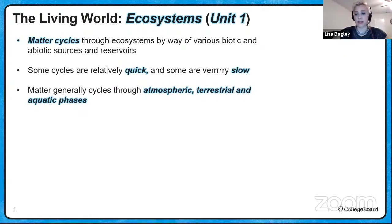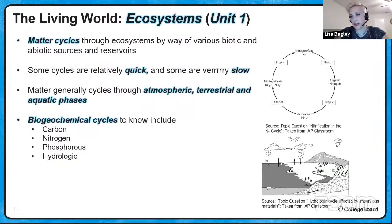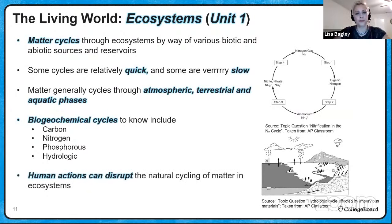The biogeochemical cycles you need to know include the carbon, nitrogen, phosphorus, and hydrologic cycles. Exam questions may show steps of the nitrogen cycle with some steps grayed out, so you need to know the steps of the nitrogen cycle. Similarly, you'll need to know the processes of the hydrologic cycle, as questions may label steps with letters A, B, C, D. And since this is AP Enviro, human actions can disrupt the natural cycling of matter in ecosystems.